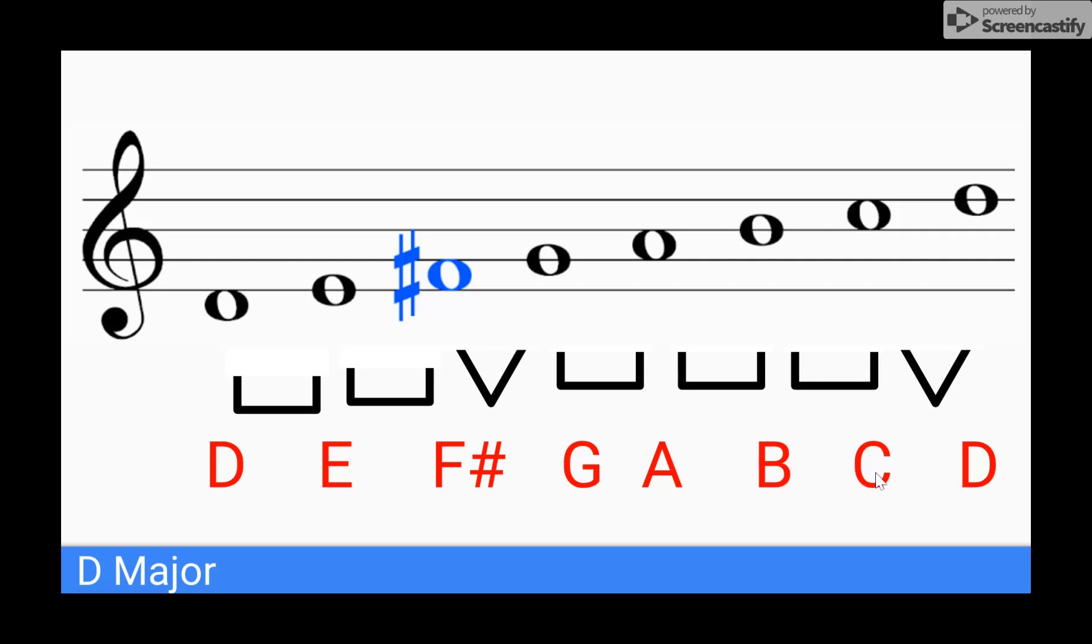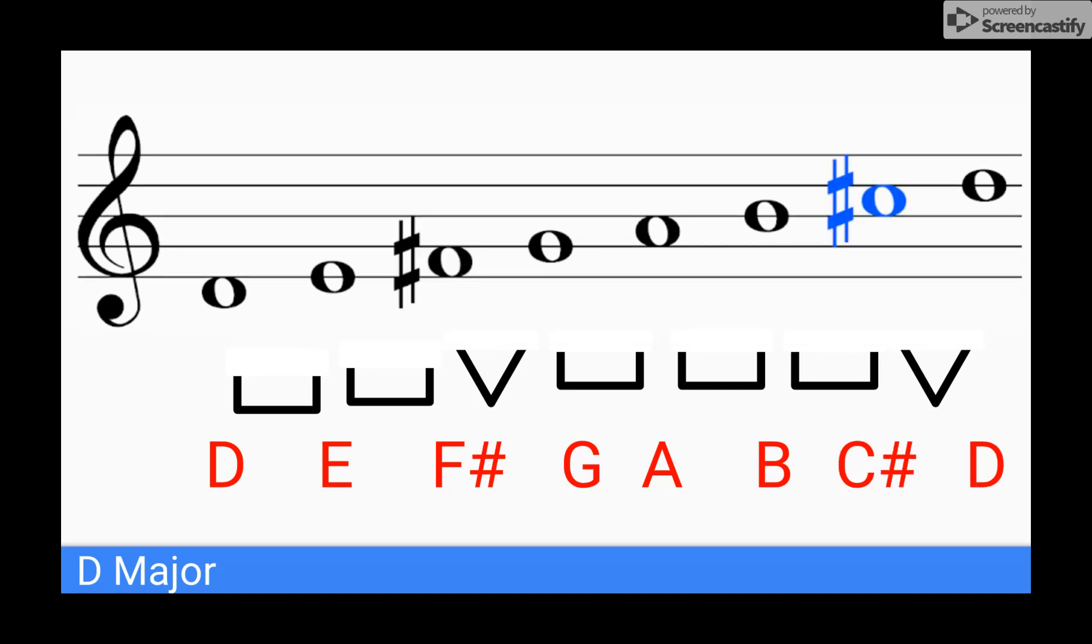B and C, I need a whole step, but I do not have it because B and C, there is no black key. So what do I do to my C? I raise it to make it a C sharp. Now I need a half step between C sharp and D, which I have just created.